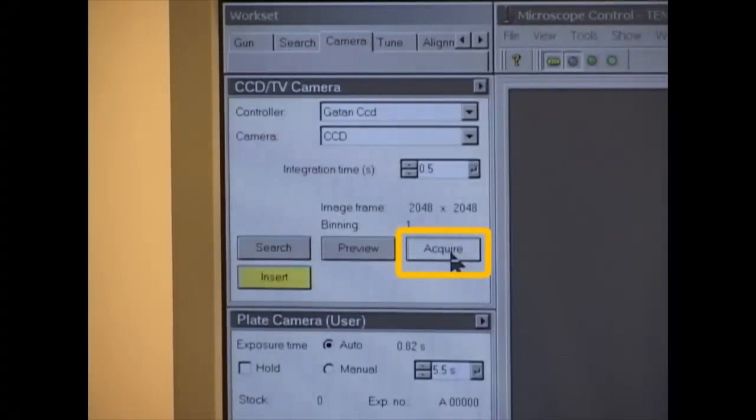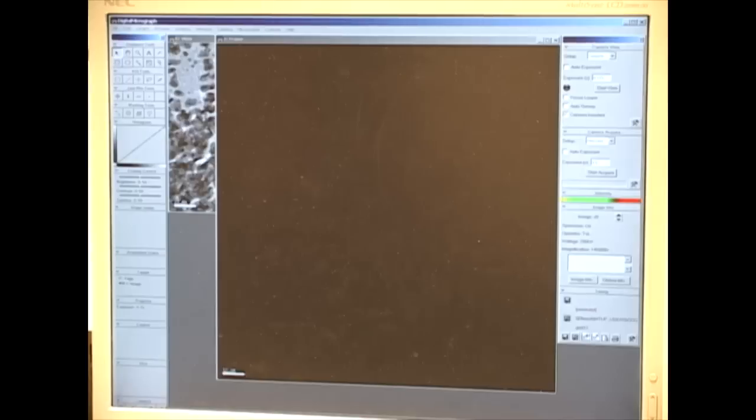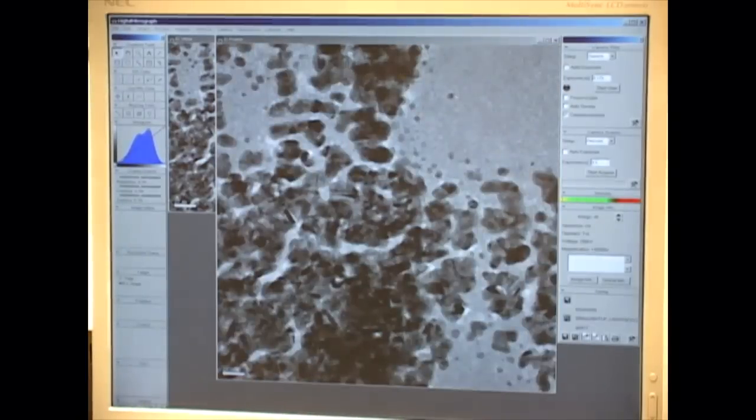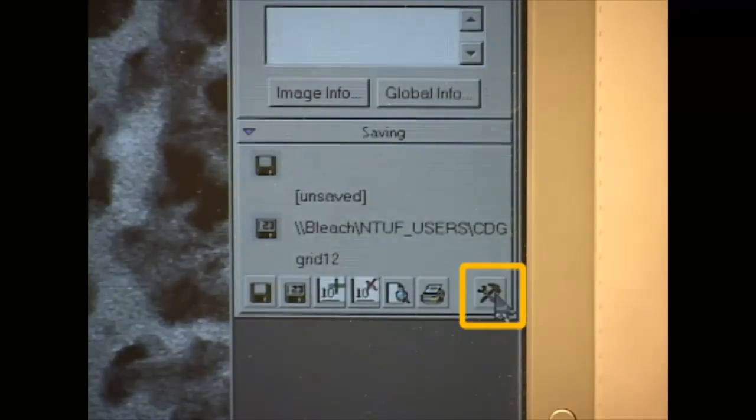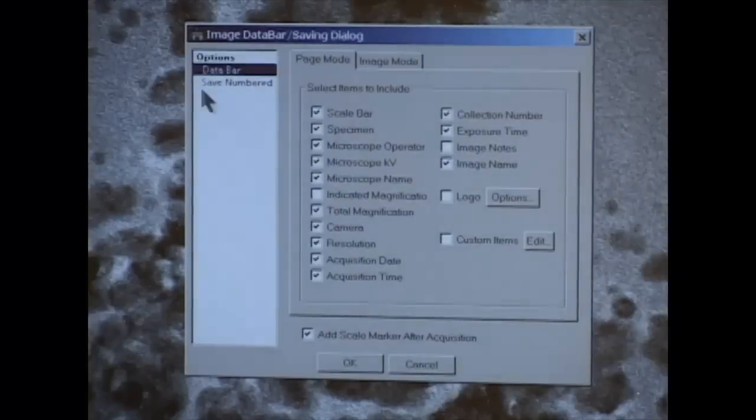Click Acquire. To save the image in the Digital Microscope, click the Tool icon in the lower right. This brings up a new window.